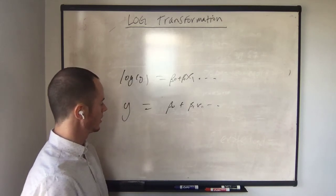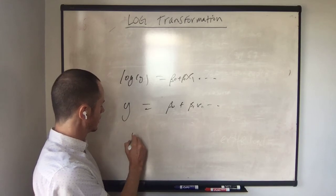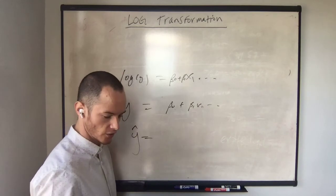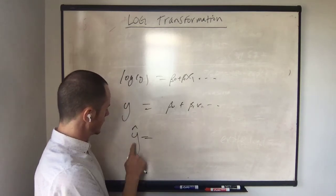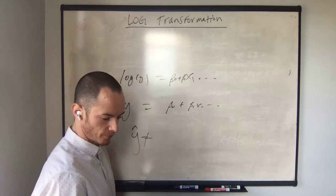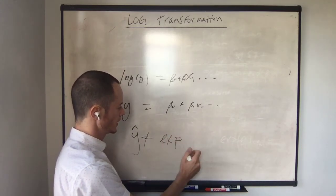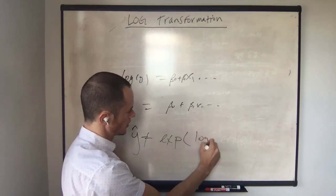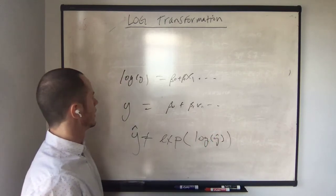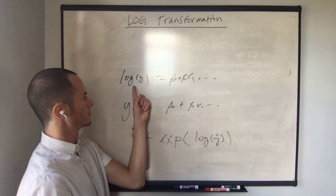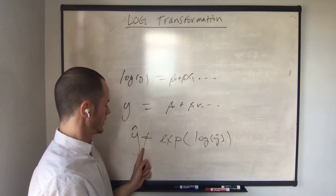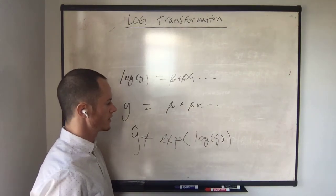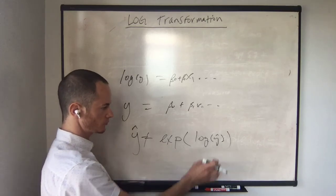And again, something else that is complicated with log transform is that the predicted value of y is not equal to the exponent e to the power of log of y hat. So we can't just take e to the power of log y to get y, the predicted value of y. And again, in a later video, we're going to discuss how we can actually get y hat from this.